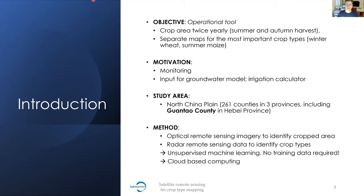The maps are generated for the North China Plain, a large area about three times larger than Germany. We focus on Guantau County in Hebei Province and on Handan Prefecture, where we designed and tested our methodology. The method uses optical remote sensing imagery to identify cropped area, radar remote sensing data to identify crop types, and unsupervised machine learning — requiring no training data — running on Google Cloud.